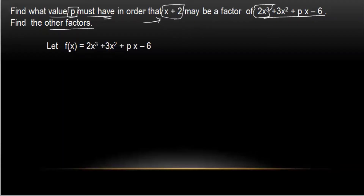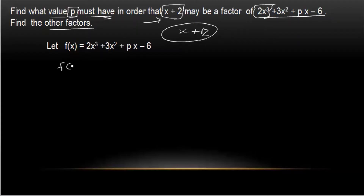Now, for x, we have to write the number of x — to write the number of x. x plus 2, the number of x plus x plus 2 is equal to 0.